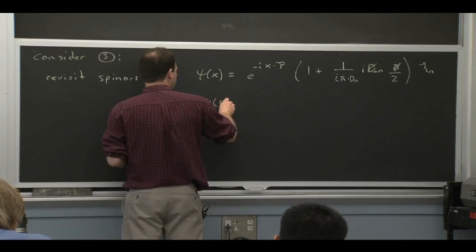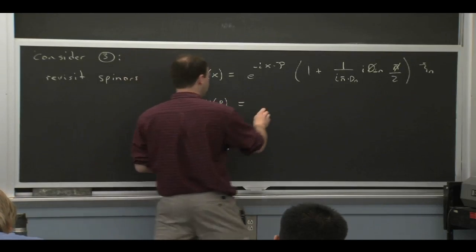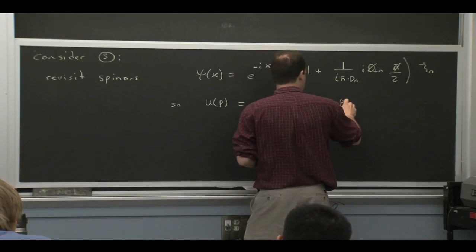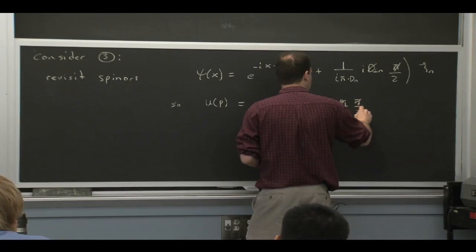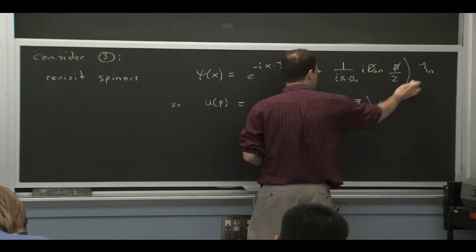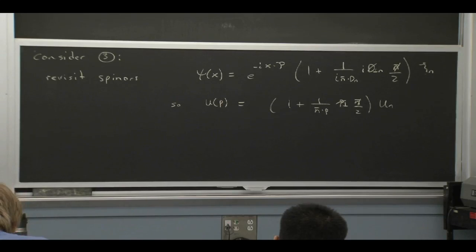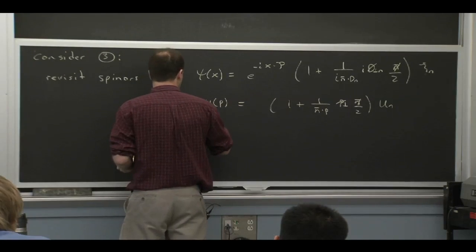Throwing away the gauge fields, we have in momentum space that u of p, the spinner, would be related to whatever spinner we have for this cn field, which I call un, by that formula.